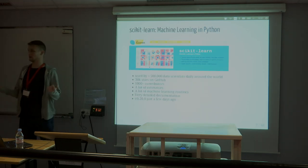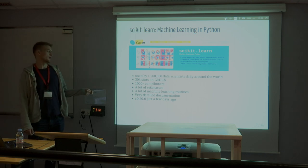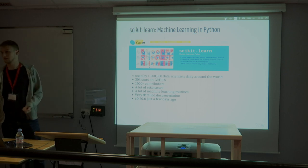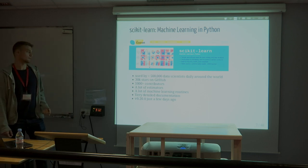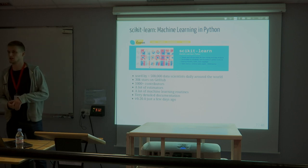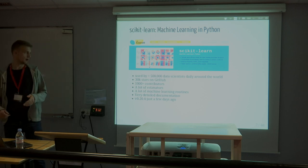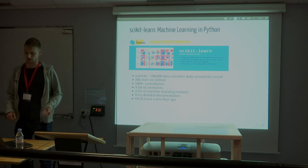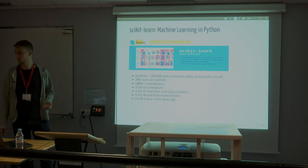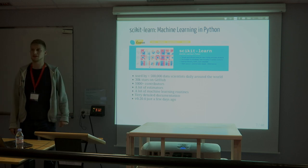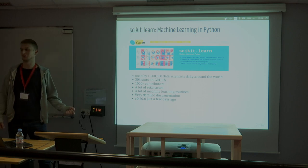In Python, scikit-learn is a very famous machine learning library. It's used by more than 500,000 data scientists daily around the world. It has 30K stars on GitHub and more than 1,000 contributors. There are a lot of machine learning models or estimators inside scikit-learn, but not only — there are also a lot of routines like cross-validation and grid search. There's very detailed documentation, so you can learn to do machine learning by just using scikit-learn and going to the documentation.